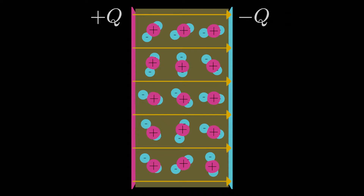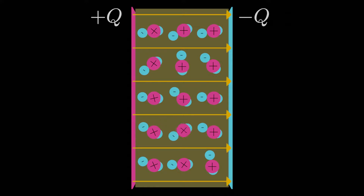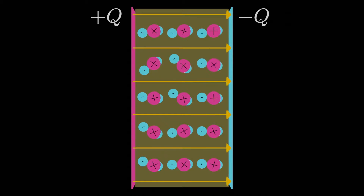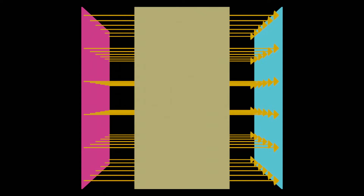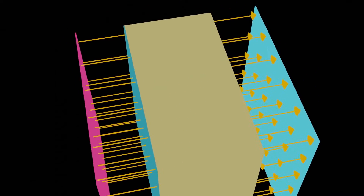The positive charge concentrations tend to move in the direction of the electric field, and the negative charge concentrations tend to move against the direction of the electric field. In practice, the usual way of modeling this effect is considering the dielectric itself to remain neutral, but the charge is now polarized on the left and right surfaces.